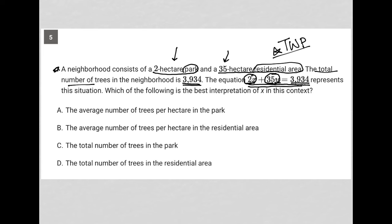Well, we've already done that work, right? We know that x, because it's multiplied by 2 in the equation, must be the number of trees per hectare in a park. So let's see which answer choice makes the most sense.